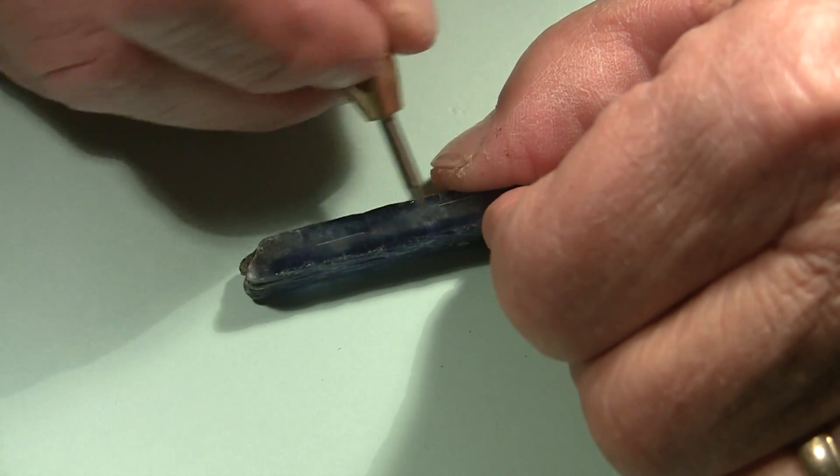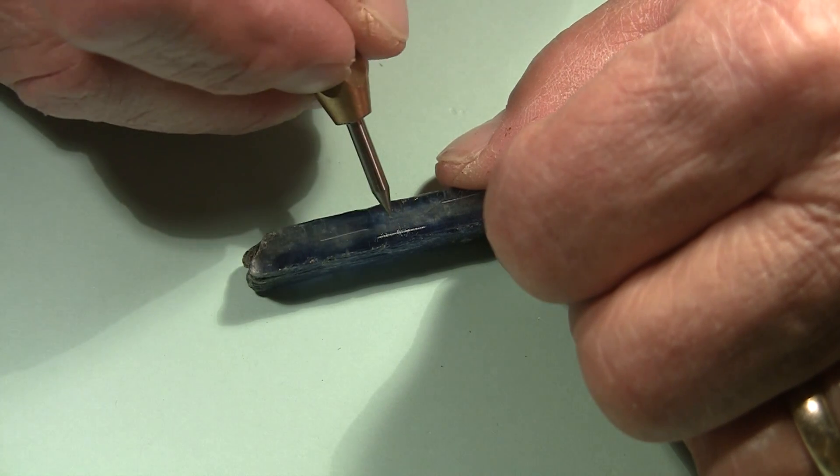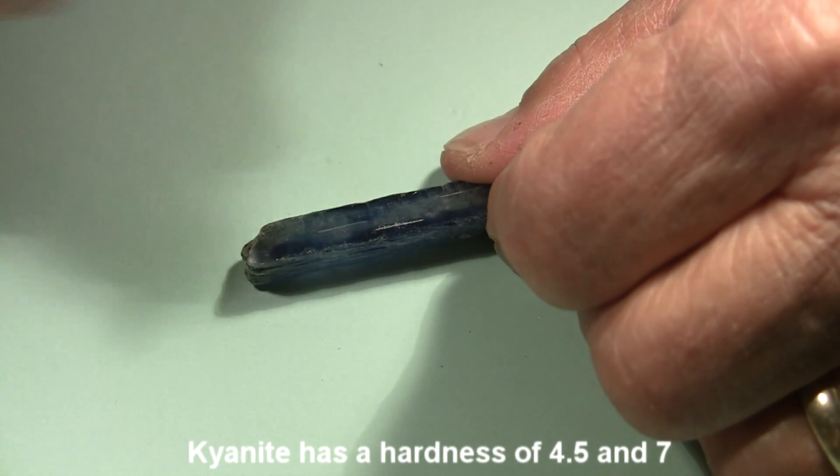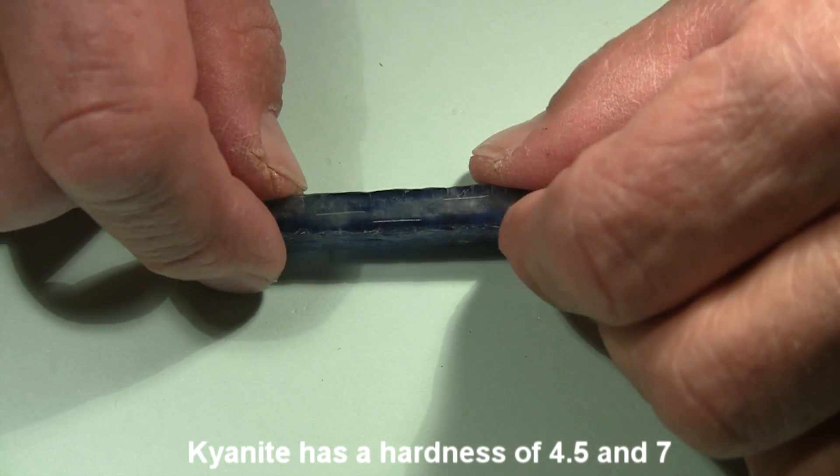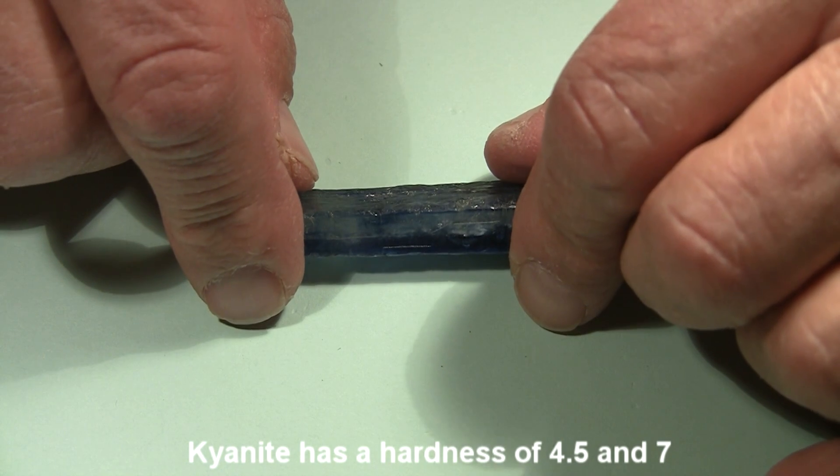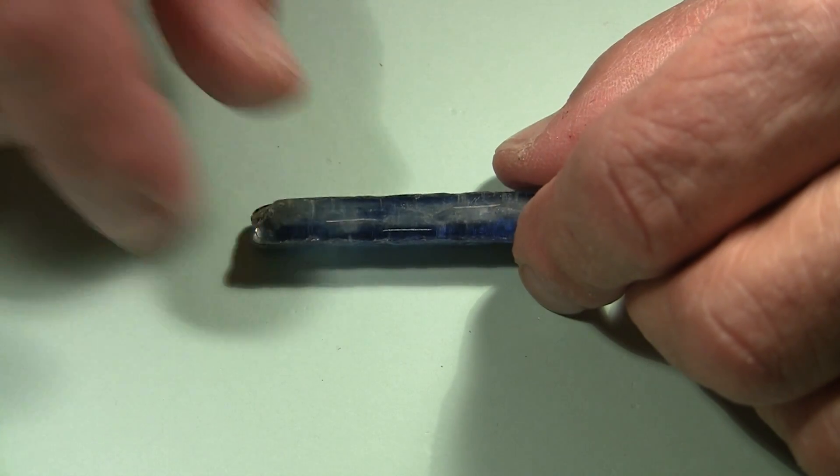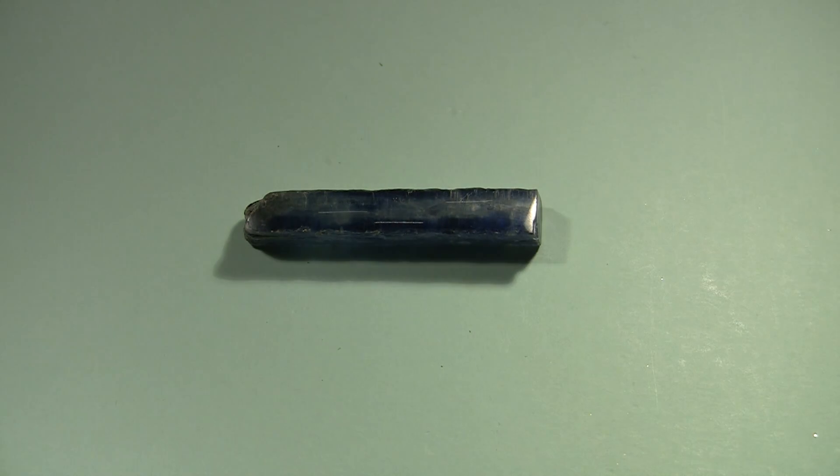So I'll try to scratch it in the long direction. I can hear it digging in. It makes a nice white line that doesn't rub off. That is definitely a scratch on the surface of that crystal. So kyanite has a hardness that is lower in one direction than in the other direction.